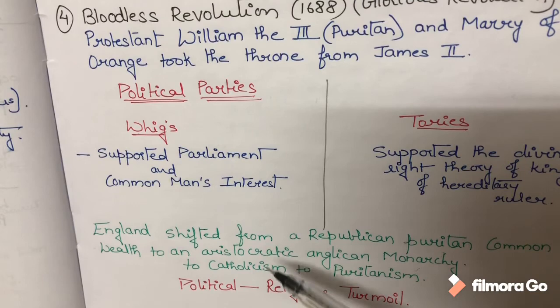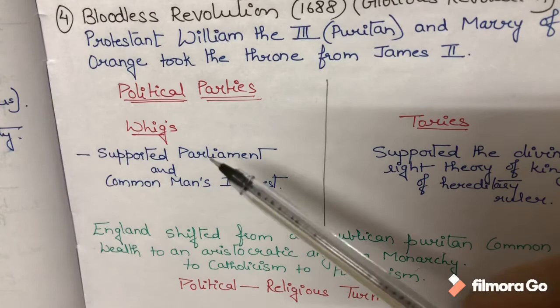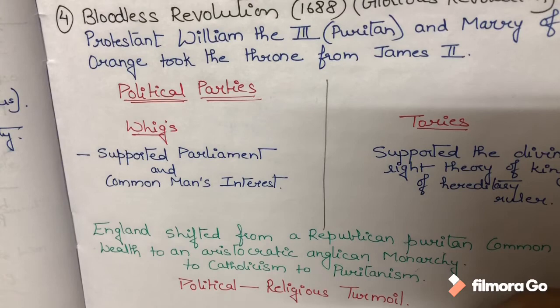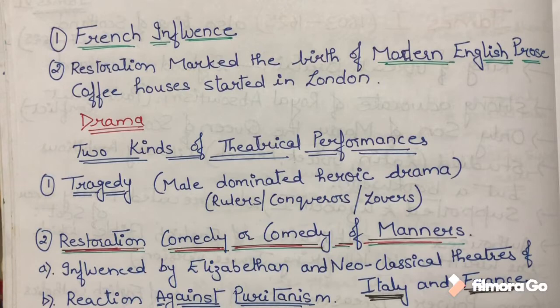In this age, there was a lot of political and religious turmoil. Politically, there were competing parties and successive rulers — Charles II, James II, and William III — each representing different religious orientations: Anglican, Catholic, and Puritan. So there was significant political and religious conflict throughout the Restoration Age.